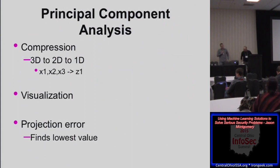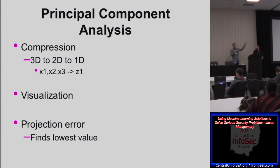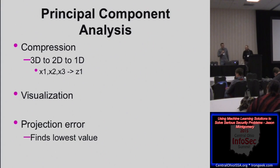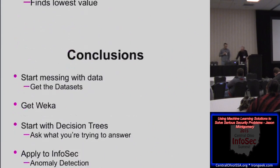Another option is PCA — Principal Component Analysis. There's a lot you can do with PCA besides anomaly detection; it's really good at compression. You can go from 3D to 2D to 1D. PCA calculates the minimum distance to take each data point and project it onto a line, reducing information. It finds the lowest projection error to make each of the new points on that line — so if you have x1, x2, and x3, it compresses them all to z1.